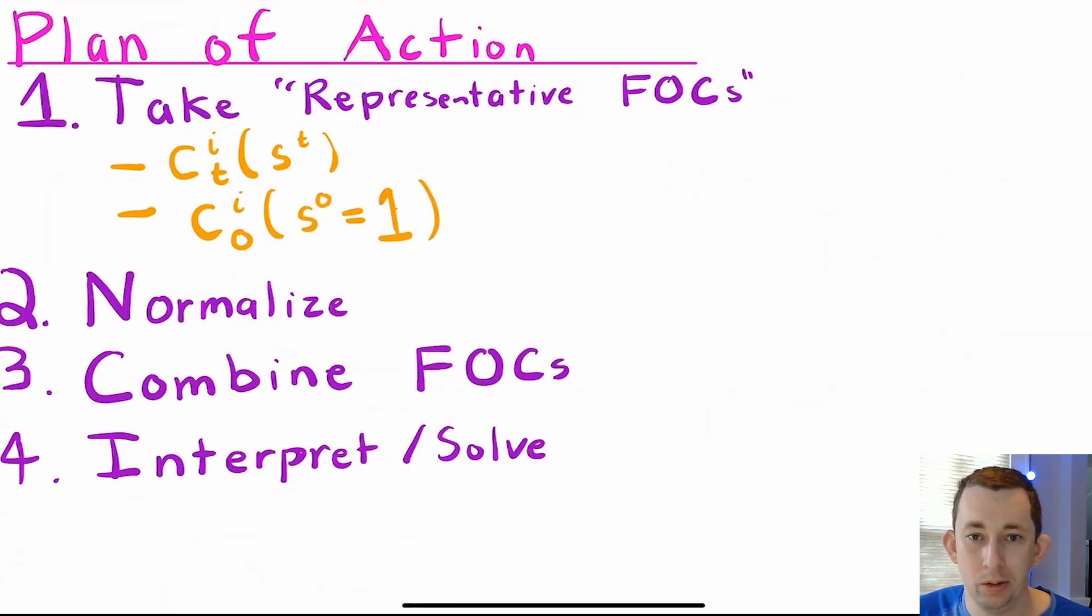Then what we are going to do is we're going to do something called normalization. I'll explain what that means in a second. After we've normalized, we'll combine those first order conditions. And then we're going to interpret the first order conditions and talk about what they mean rather than go ahead and go all the way through and solve for the actual level of consumption. The reason we're going to do this is because often in these problems, as they get more complicated, we're not so much interested in the answer. We're more interested in what the first order conditions mean and what the answer sort of looks like. And that's called characterizing the solution rather than solving.